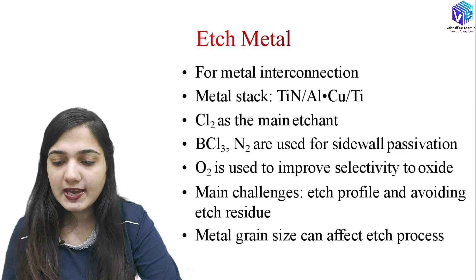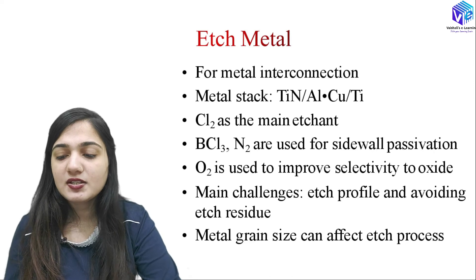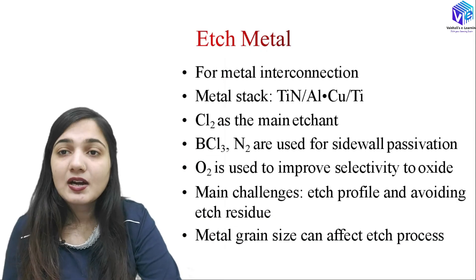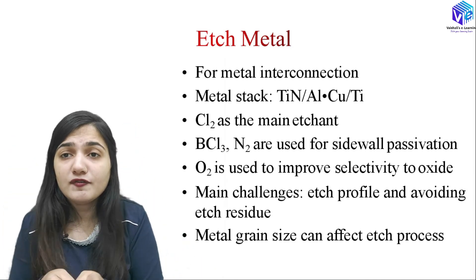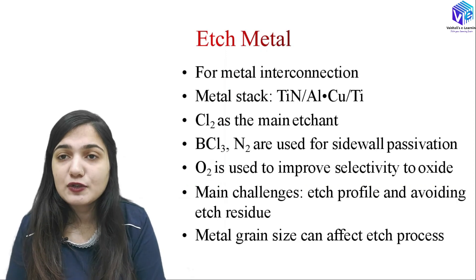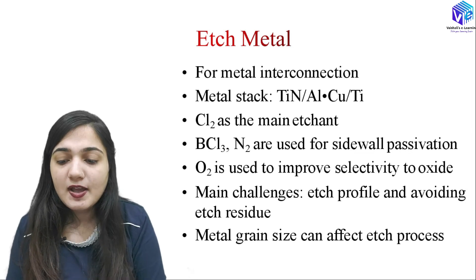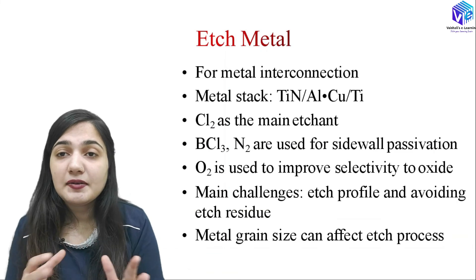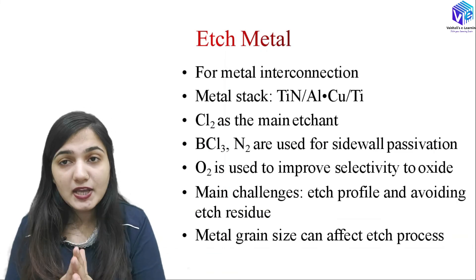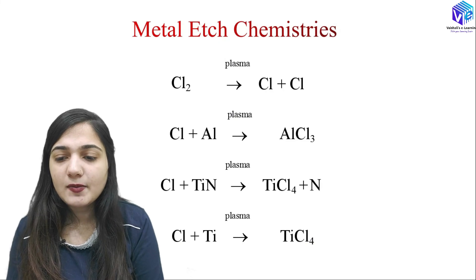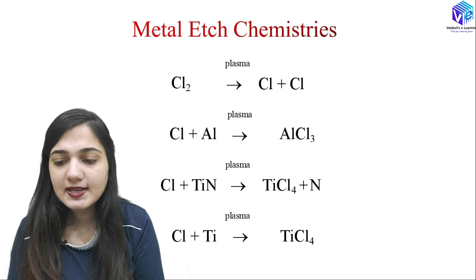Oxygen gas is used to improve selectivity. The challenges in metal etching include controlling the etch profile — etching a particular metal layer in a particular direction is difficult. Etch-ready residues must also be avoided. The metal grain size can affect the etch process: higher metal grain size can make the etching isotropic, so smaller metal grain size is preferred for anisotropic etching. In the chemistry, Cl2 dissociates in plasma to form chlorine atoms, which react with aluminium to form AlCl3, and with titanium nitride to form TiCl4.